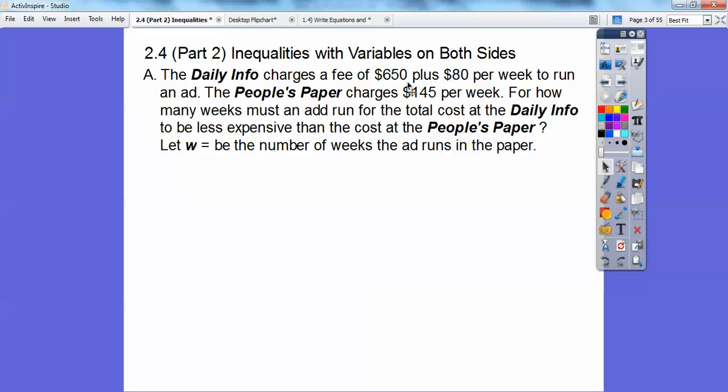Can you see since this $80 is less than $145, the initial cost of $650 is going to make it more expensive in the beginning. But in the long run, these lower payments are going to be outweighed by this upper payment. So let's write an inequality to represent this. We want to know how long is the Daily Info paper less than the People's Paper. So this is what we're going to solve.